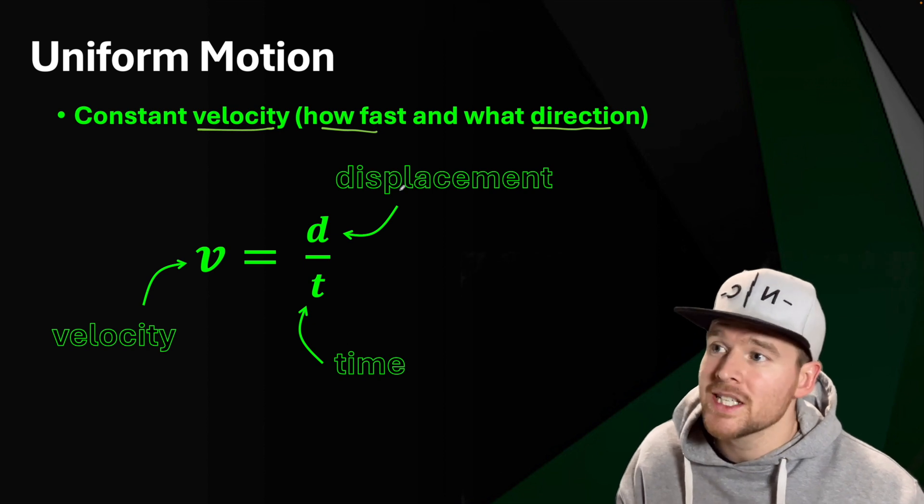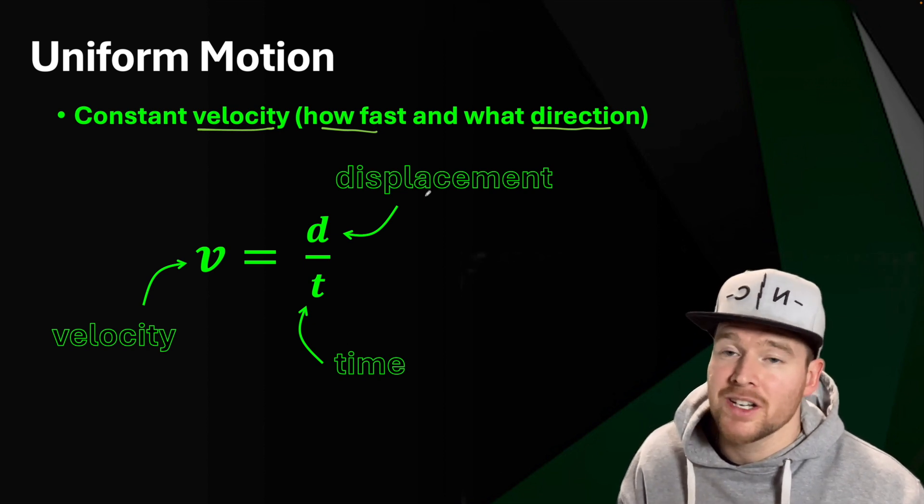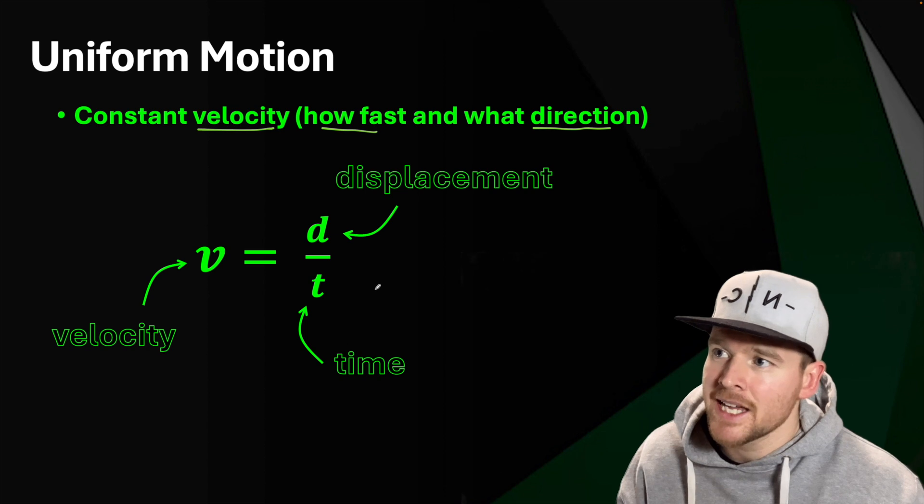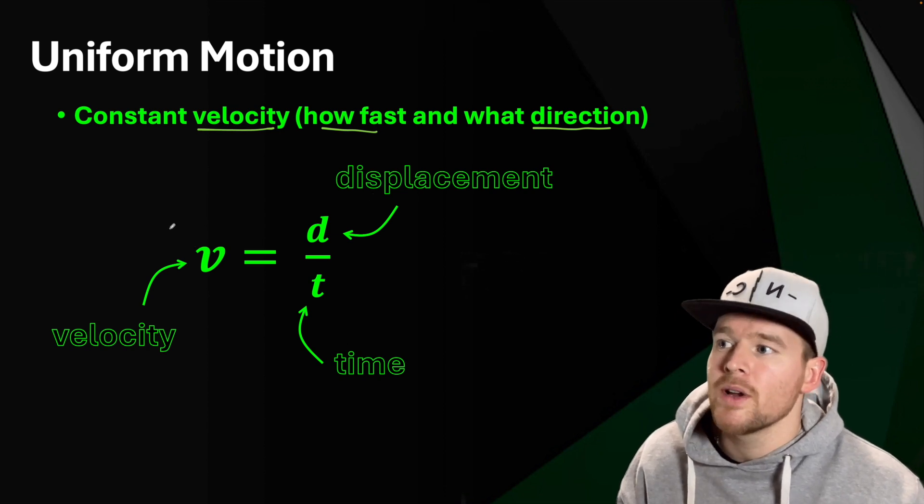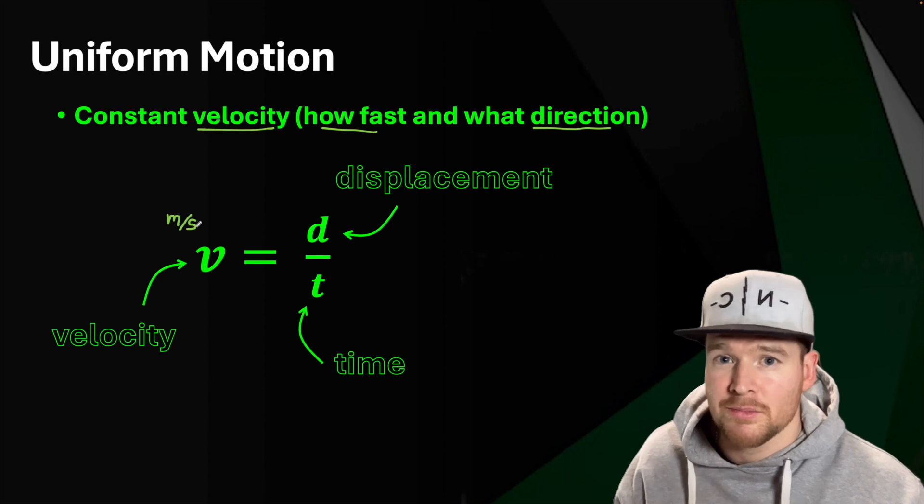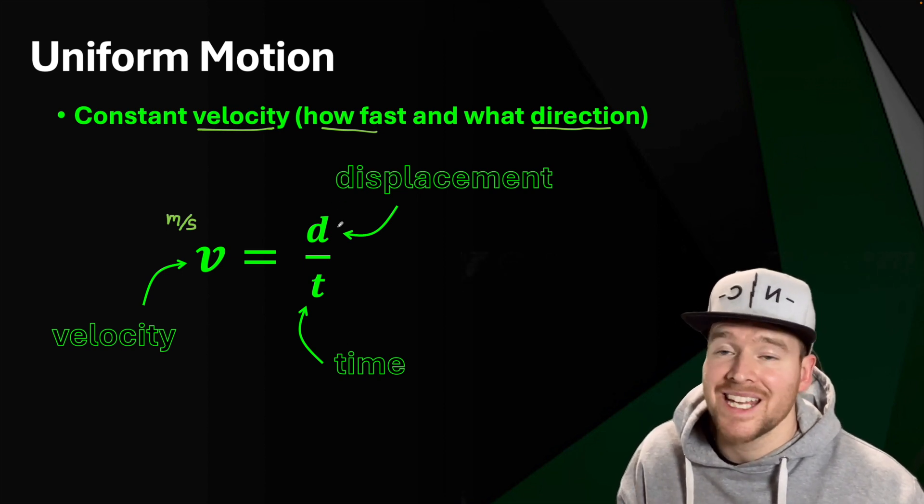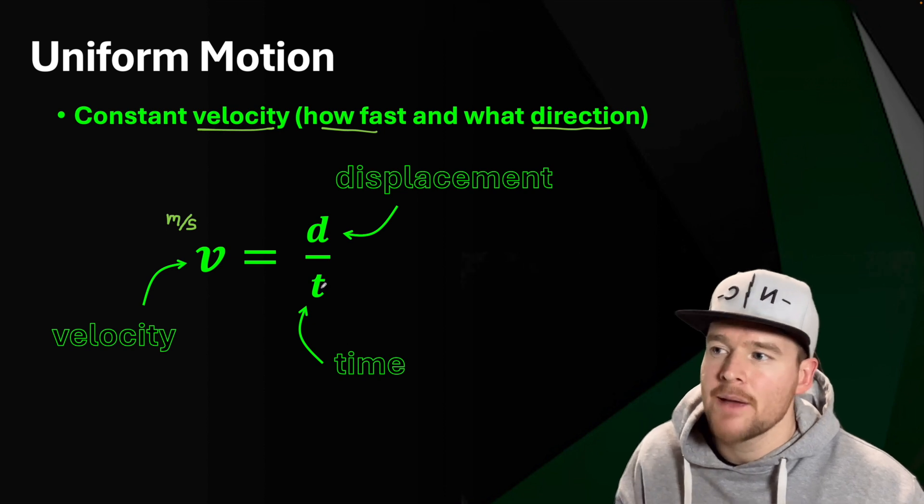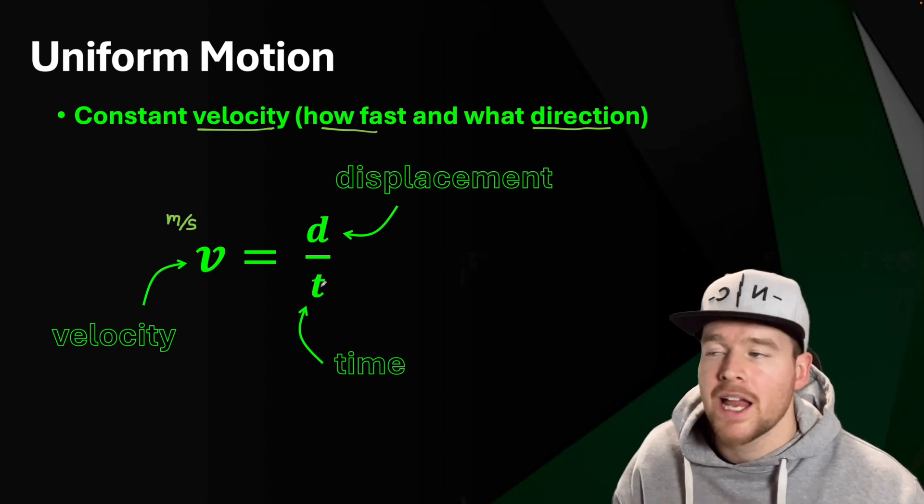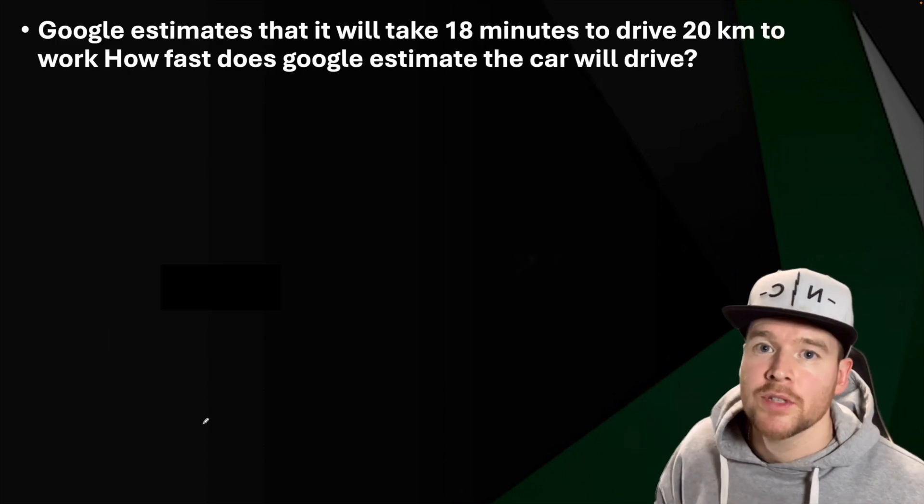The v represents velocity, the d represents displacement, and t represents time. Displacement could be measured in meters, time in seconds. So meters divided by seconds, we'd have our velocity in meters per second. However, equally good, you could have your displacement measured in kilometers and time in hours, giving velocity in kilometers per hour.